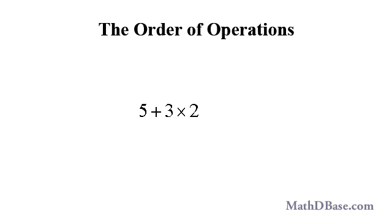For example, if we have this expression, should we add the 5 and 3 first to get 8, then multiply by the 2 to get 16, or should we multiply the 3 and 2 first to get 6, and then add 5 to get 11?